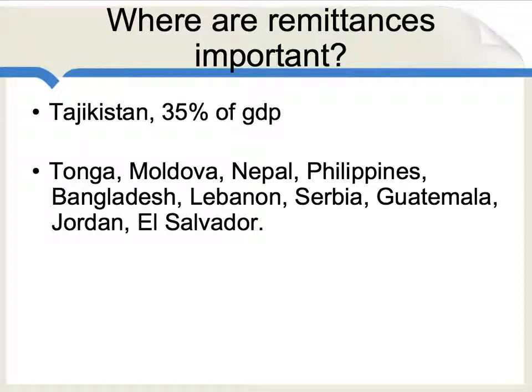Number one on this list is Tajikistan, where remittances account for about 35% of GDP.